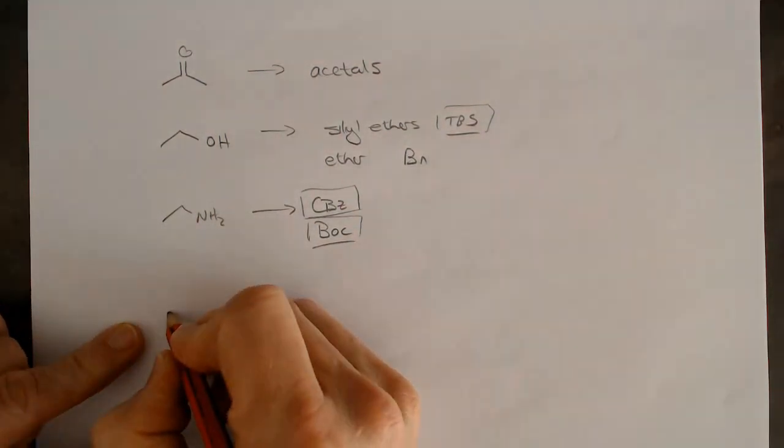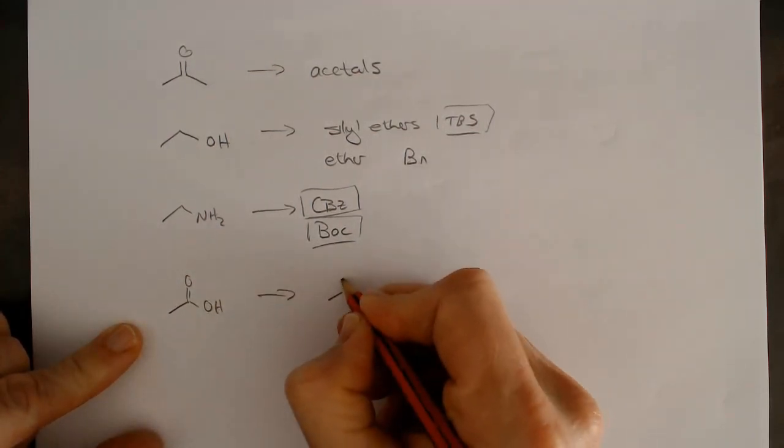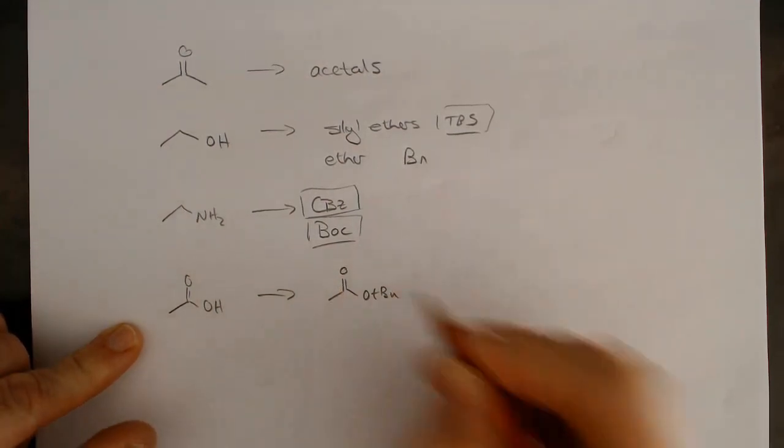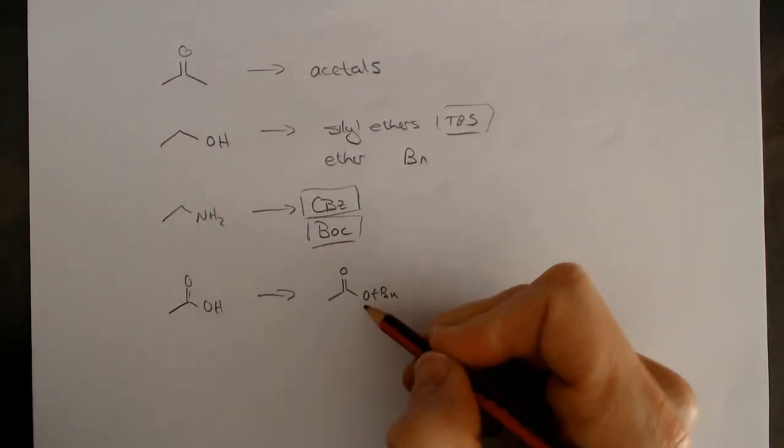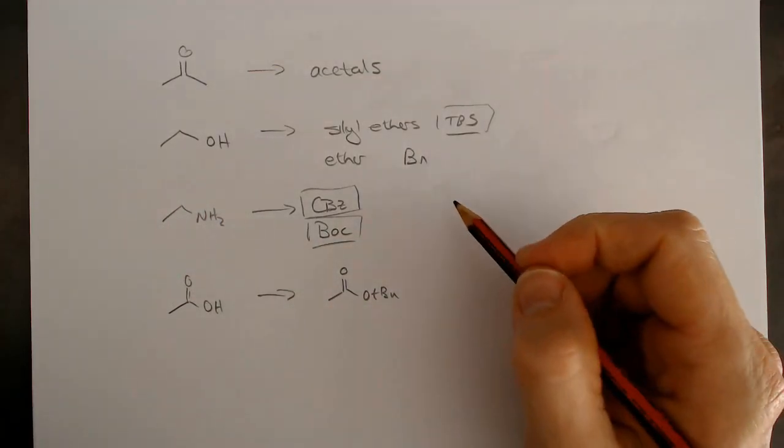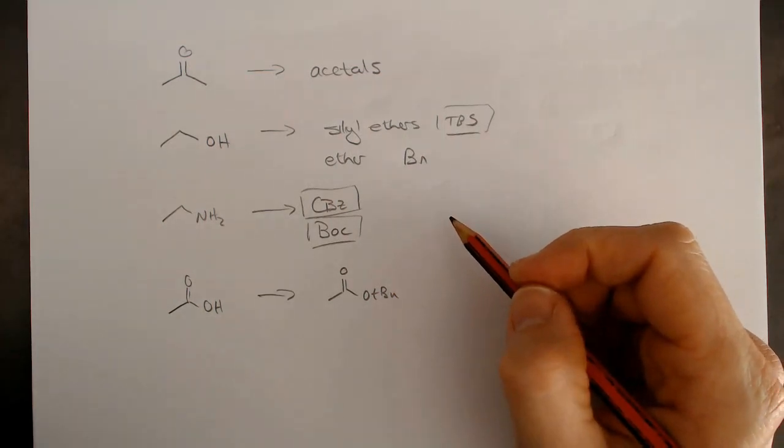Lastly, we've got the protecting group for carboxylic acid, and an example of that is the t-butyl ester, because that just makes it less reactive through sterics. This is an example, and I must stress to you that this really is just the tip of the iceberg in terms of protecting groups.